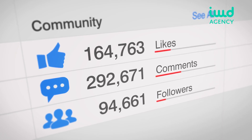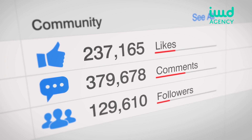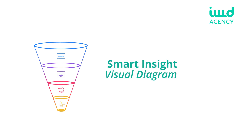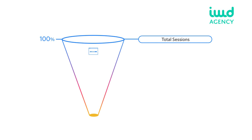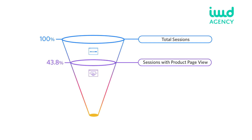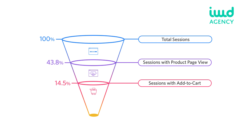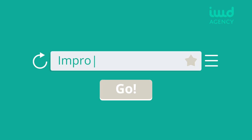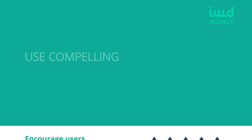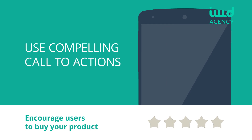Your conversion funnel might show, for instance, that your audience uses social media to follow your store's promotions or discounts. Armed with this information, you would boost your presence on social media platforms like Facebook or increase your followers. Smart Insights' visual diagram illustrates what the average conversion rate for an ecommerce sales funnel is. As this example shows, nearly 50% view a product page, but only 15% add a product and only 3.3% make a purchase.